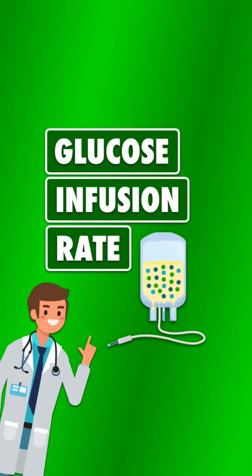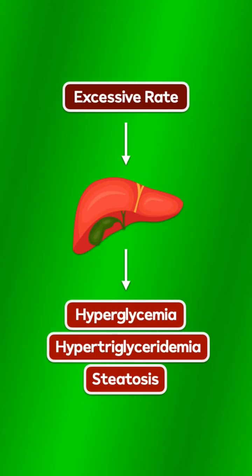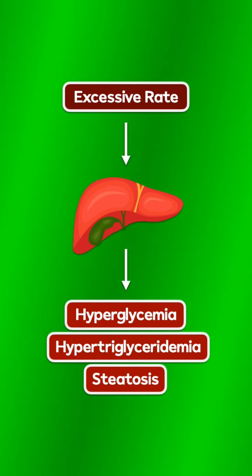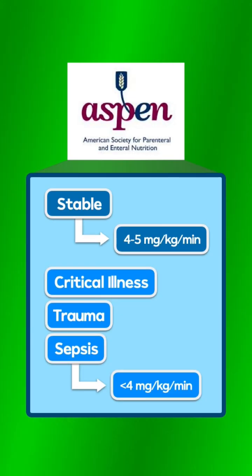The glucose infusion rate is important to know when ordering parenteral nutrition. This is because an excessive rate surpasses the liver's ability to metabolize it and increases the risk of hyperglycemia, hypertriglyceridemia, and steatosis.